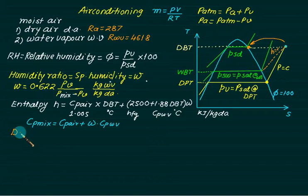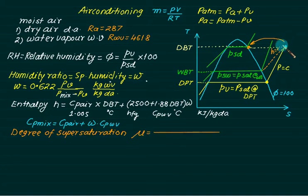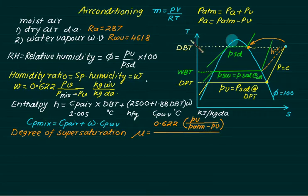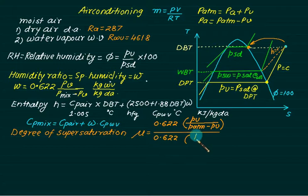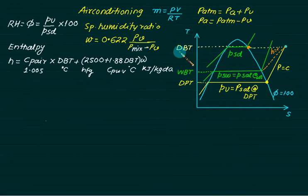The degree of saturation (or degree of super saturation) is represented by mu (μ). It is the ratio of the specific humidity at the given point to the specific humidity at the saturated condition (at the same dry bulb temperature). At the saturated condition, Pv = P_sd, so: μ = w / w_sat = [0.622 × Pv / (P_mix − Pv)] / [0.622 × P_sd / (P_atm − P_sd)].